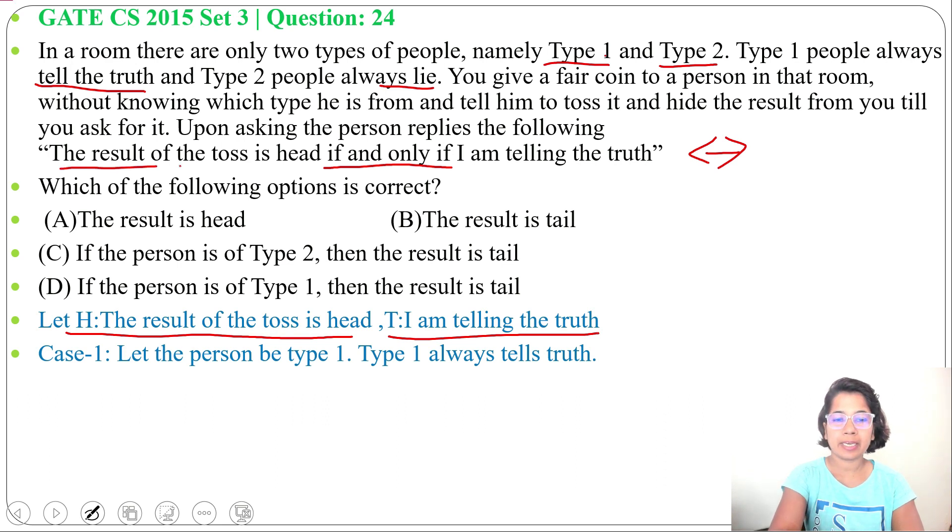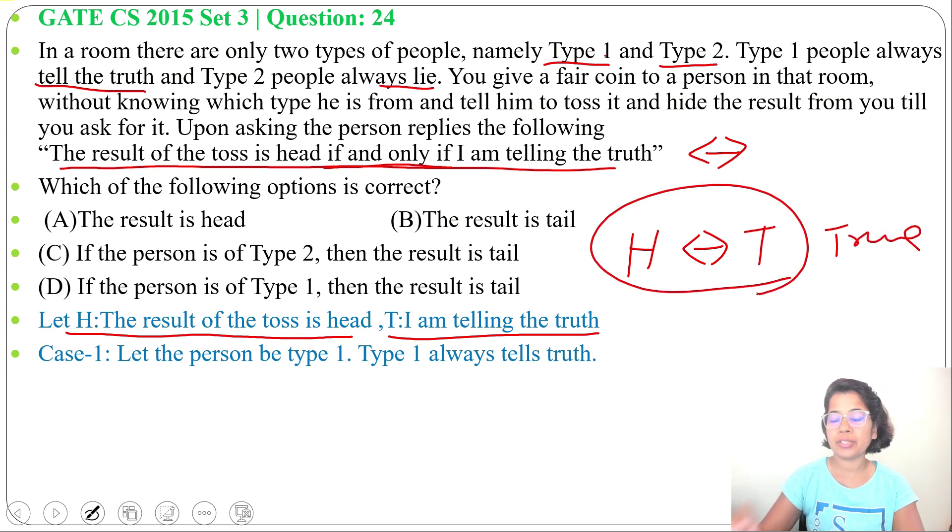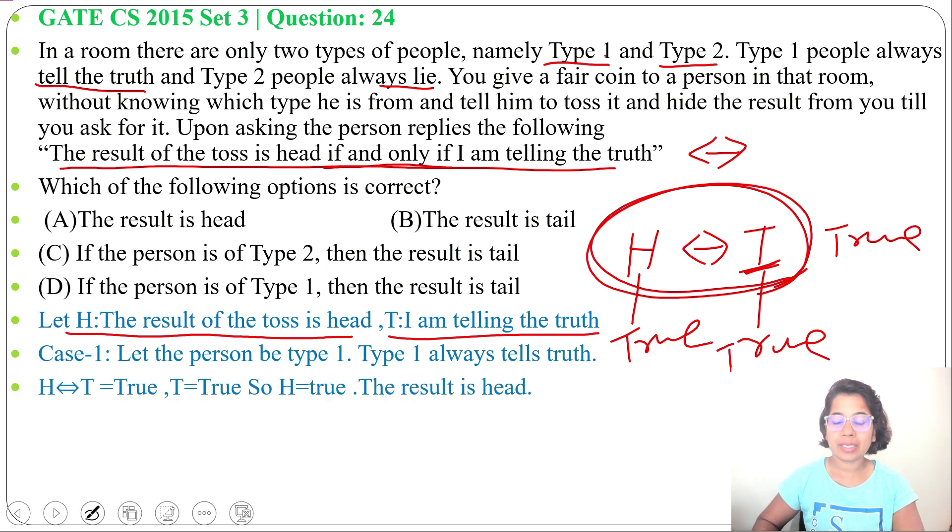Let Case 1: the person is from Type 1, means that person always tells the truth. Now this statement we can write as H double implication T. In Case 1 this is true, so that whole double implication is true. And in Case 1 that person is telling truth, so this T value is true. And when T value is true and whole double implication is true, so H should be true, means result is head.